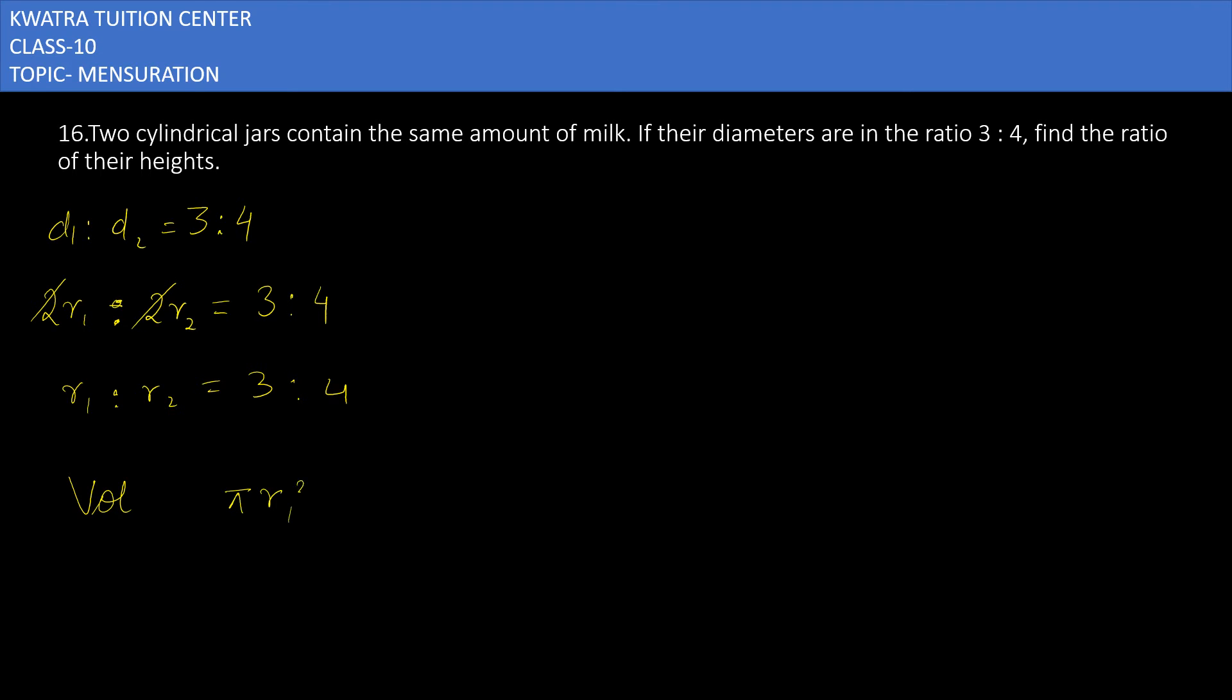π r1 squared h1 equals π r2 squared h2. Height can be different, obviously, but the amount of milk is the same, so I've set the volumes equal.